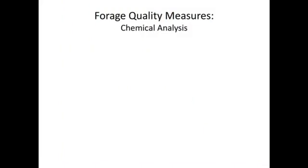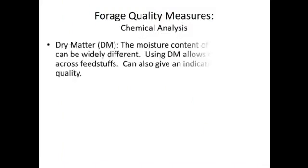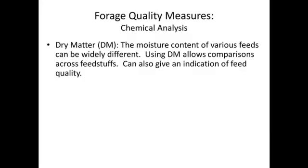When we look at forage quality measures, there are a couple of key components we need to look at. Dry matter is one of them. The moisture content of various feeds can be widely different — just think of the difference between silage and hay, for example. So putting those forages on a dry matter basis allows us to compare across feedstuffs. It's very important when we begin to balance rations as well because everything is on a dry matter basis. It can also give us an indication of feed quality, since certain feeds have to be stored at a correct moisture content, otherwise we'll have problems in storage.